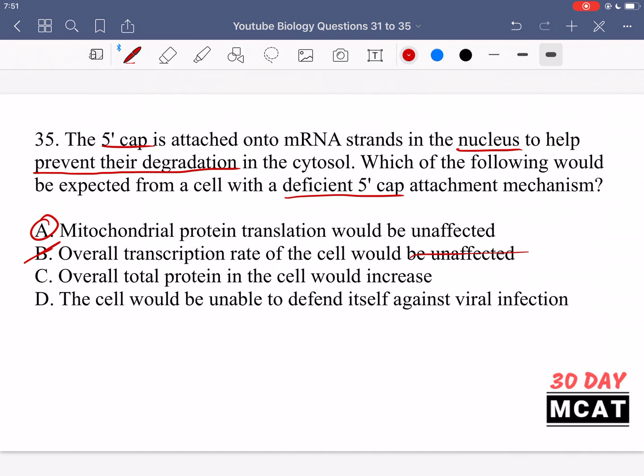C is saying overall total protein in the cell would increase. Likely it's going to decrease because mRNA is being degraded. And so the ribosome can't really get to it in time and translate the mRNA and then give us the protein product that results. And so it's likely that protein in the cell would actually decrease rather than increase.